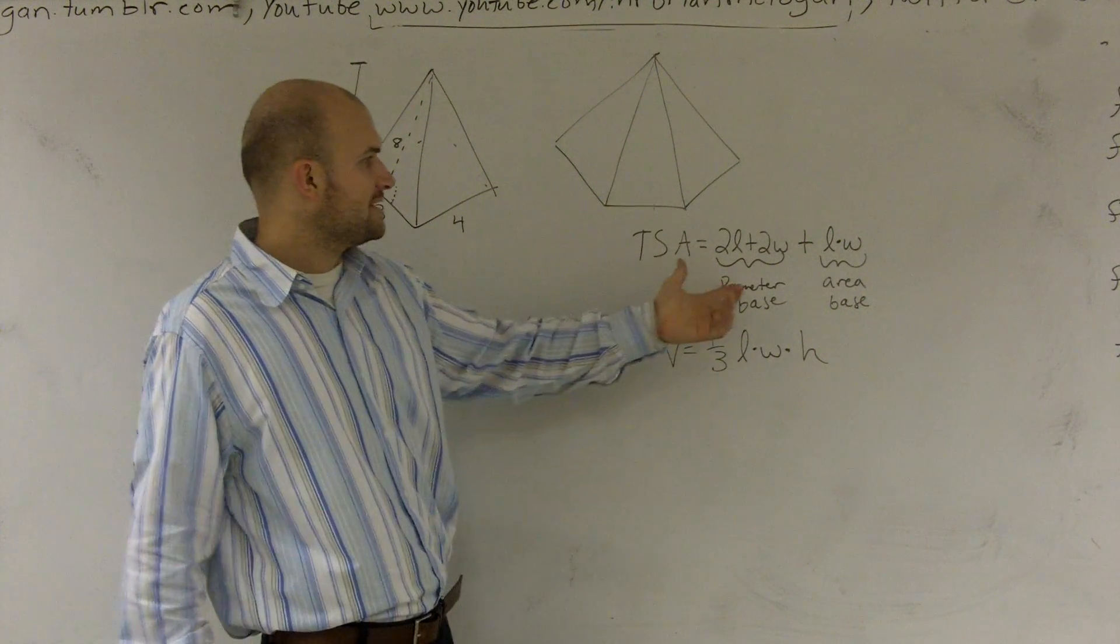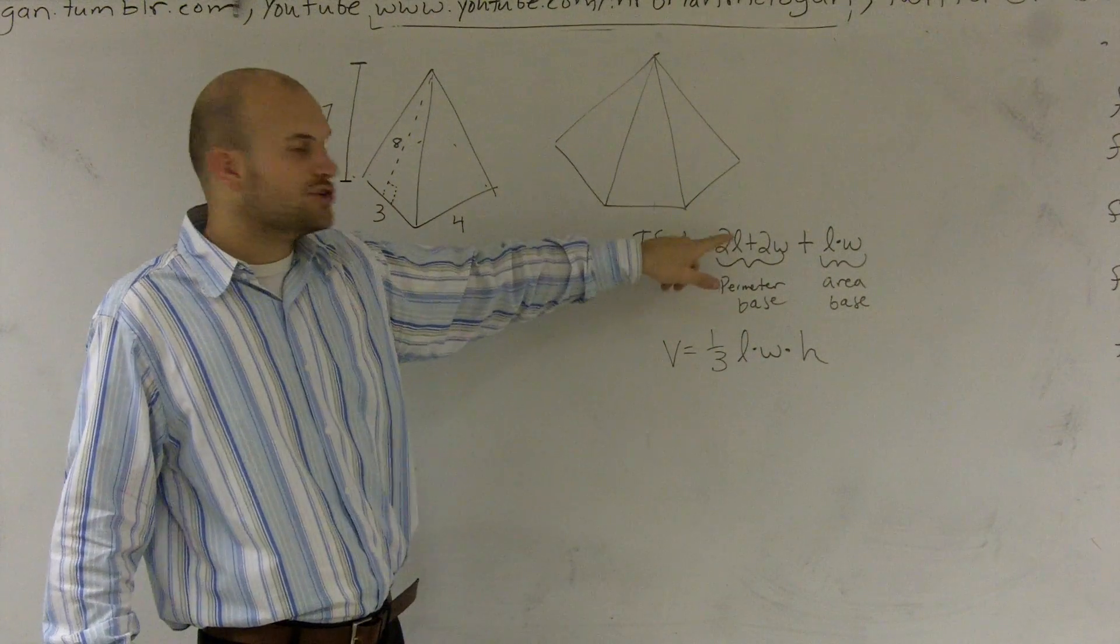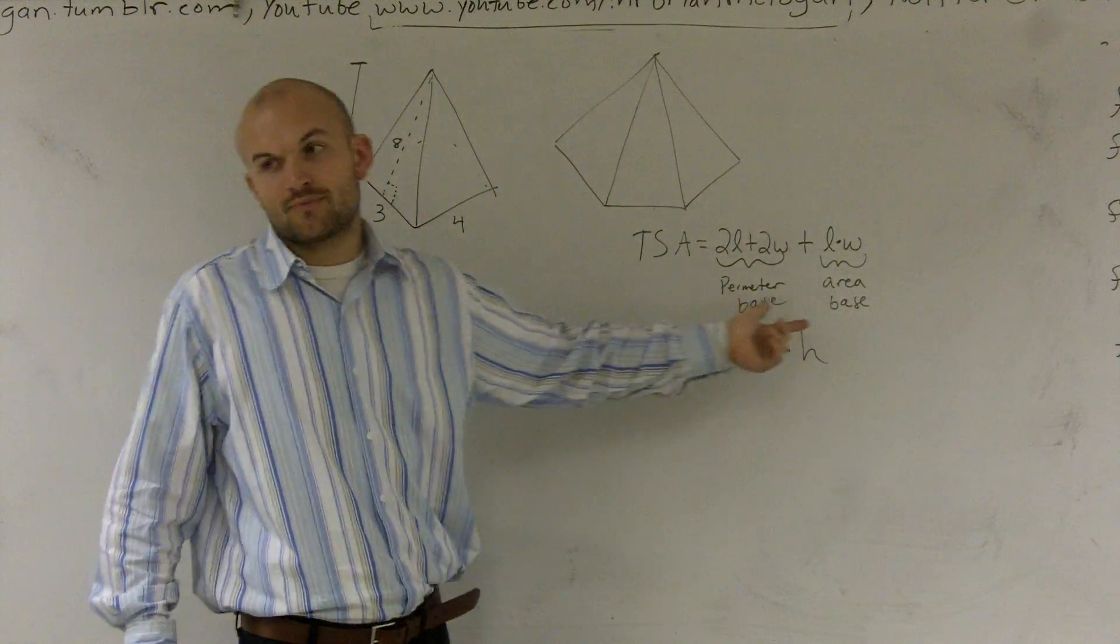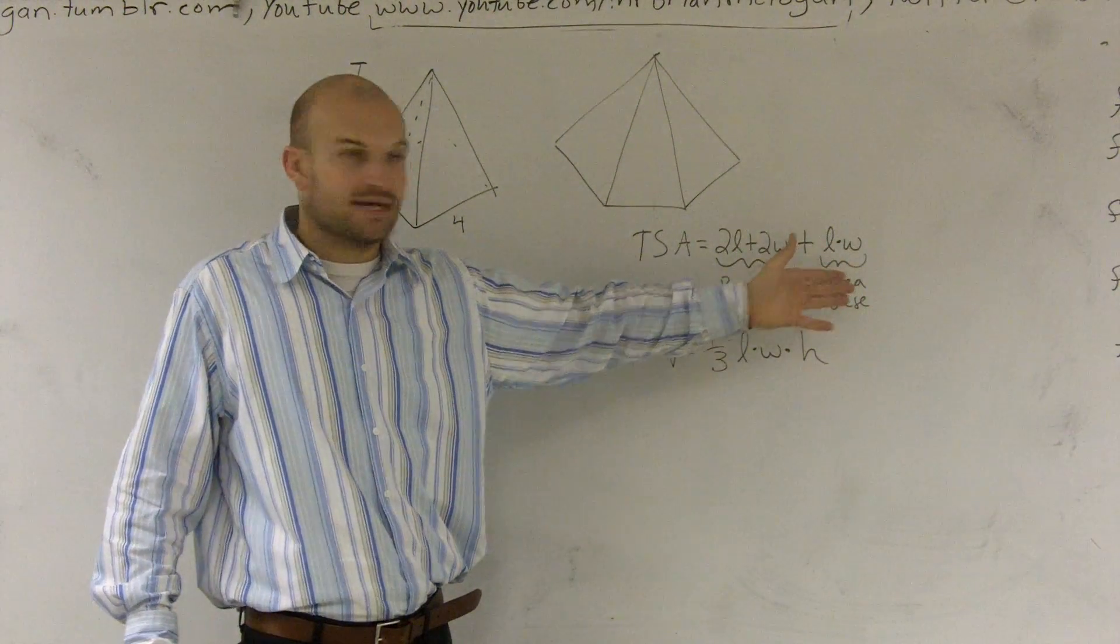For my problem, you're going to find the perimeter of the base. For a rectangle, the perimeter of the base is 2 times your length plus 2 times your width. However, it can be the perimeter of whatever your base is. Just find the perimeter of the base and then add it to the area of the base.